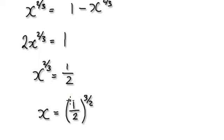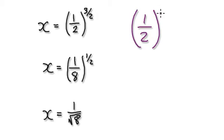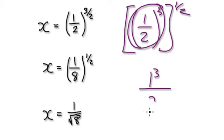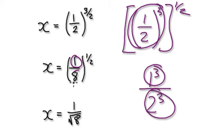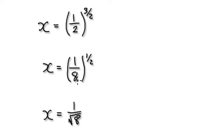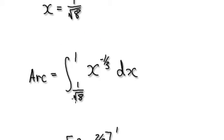When you get to this stage here, visualize this as being 1/2 to the power of 3, then to the power of 2. So this thing here to the power of 3 is really like doing 2 to the power of 3. And don't forget you've still got these square roots outside, so that's this bit here. And so this thing here becomes this.